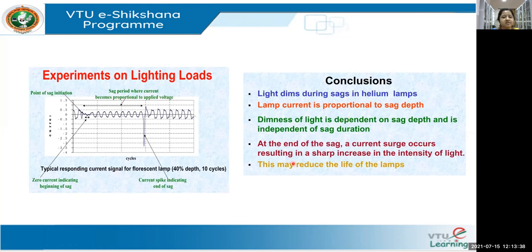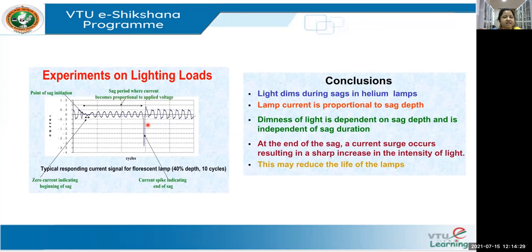We have all observed this — when voltage comes down and suddenly increases, it is more visible in terms of light than a fan. You can also feel the fan speed varying. However, too much flickering in a lamp will reduce its life — whether LED, LCD, incandescent, or helium lamps — the life of the lamp will come down.